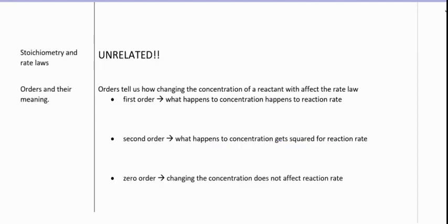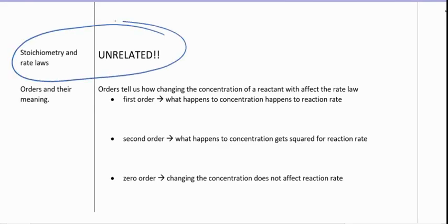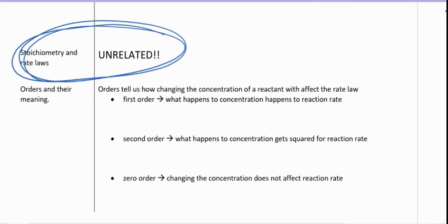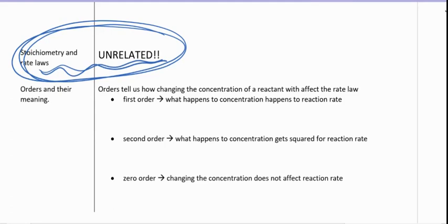It's important to know that when we are writing rate laws, we cannot use the stoichiometry of the overall reaction. We can use stoichiometry when we're talking about relative rates — comparing the rate of consumption or production of various species — but when we are writing the rate law, we cannot use stoichiometry at all. These are unrelated things.